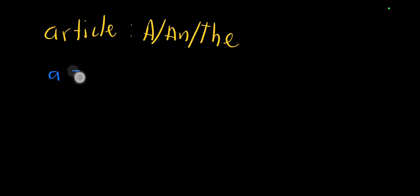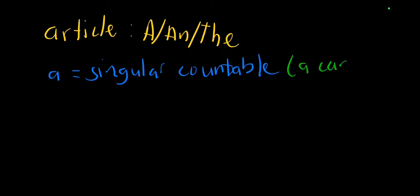Let's see how we use these three articles. The first one is article 'a', or we usually pronounce it as 'a' - a car, a chair, a table. When do we use 'a'?